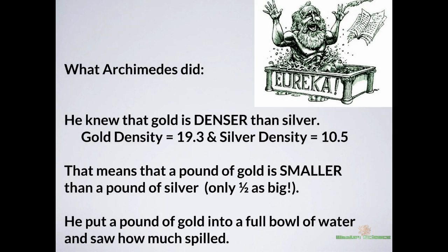Let's go back to Archimedes. He was having a really tough time trying to figure this out, so he decided to take a bath. When he went into the water, he saw the water level rise as his body went in. He realized he could put the gold crown into a bucket of water, see how much the water level goes up, then put a pound of gold into a bucket of water, see how much that water goes up, compare the water displacements, and see if the volumes of the two things are in fact the same. This concept became known as water displacement — a technique used to measure the volume of an irregular object. The story goes that he was so excited about this discovery that he jumped out of his bathtub and ran around the streets naked yelling, 'Eureka!'